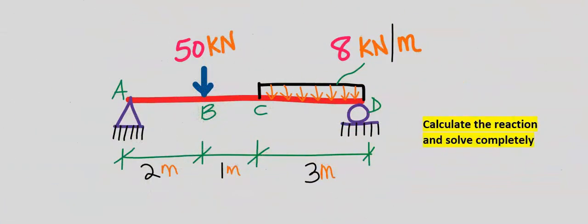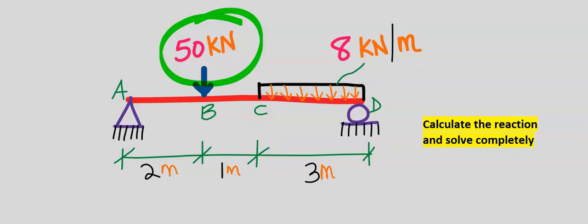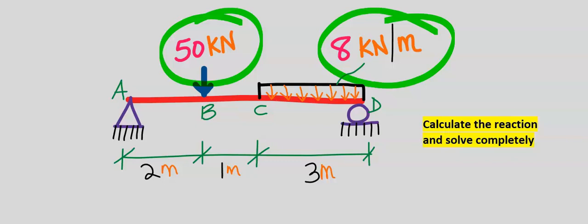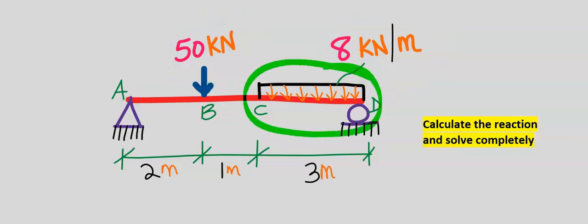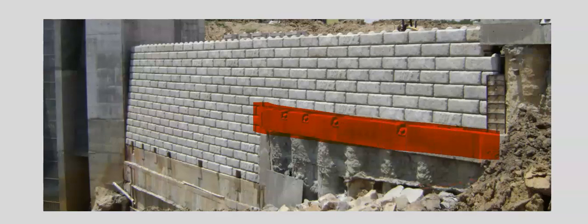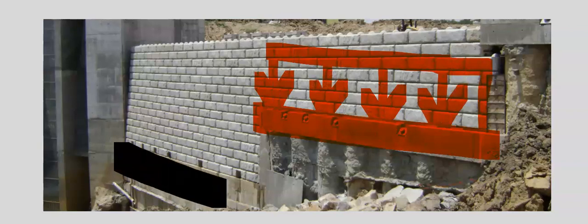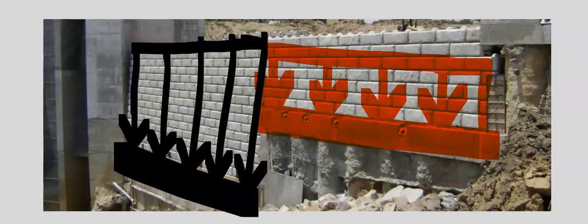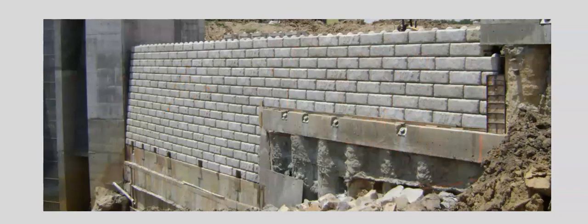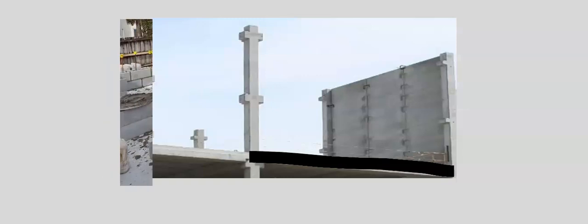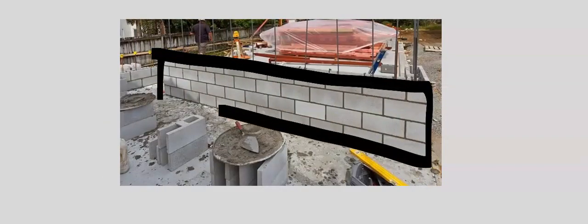Let's find the reaction forces on this beam. On this beam there is a point load and also a uniformly distributed load, but the uniformly distributed load does not span across the entire beam. On another beam there is also a uniformly distributed load, and the load values at A and B will be different. This span can have a uniformly distributed load from a wall, and here we can have a point load from a column.